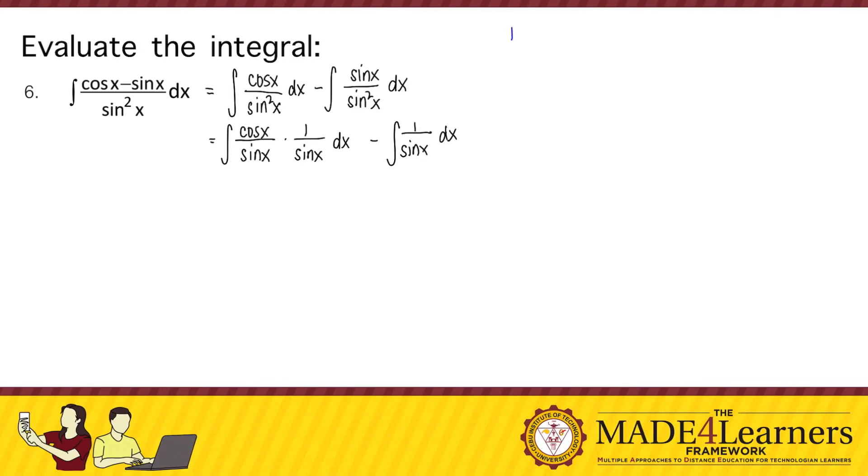If an integrand involves trigonometric functions, you always recall your identities. So recall that cosine x over sine x is equal to cotangent x, and that 1 over sine x is equal to cosecant x. Therefore, we can rewrite our integrand as cotangent x cosecant x dx minus cosecant x dx.